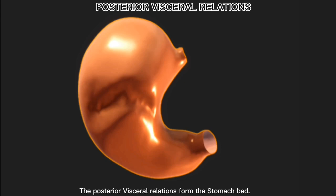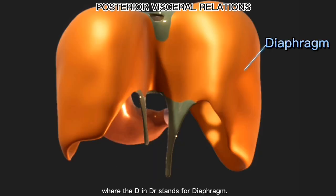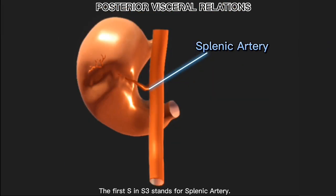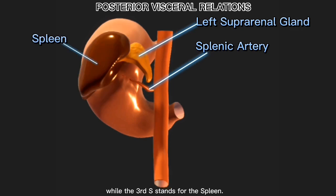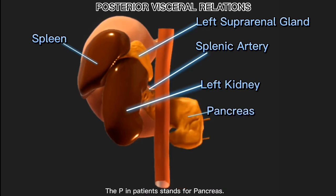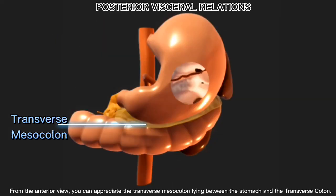The posterior visceral relations form the stomach bed. We will use the mnemonic 'Dr. S3 Kills Patients Mercilessly': D for diaphragm — removing it now to appreciate the other organs. The first S stands for splenic artery, the second S for left suprarenal gland, the third S for spleen. K stands for left kidney, P for pancreas, and M for transverse mesocolon. From the anterior view, you can appreciate the transverse mesocolon lying between the stomach and the transverse colon.